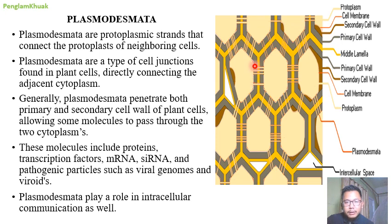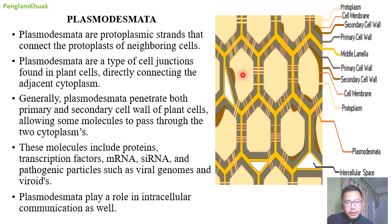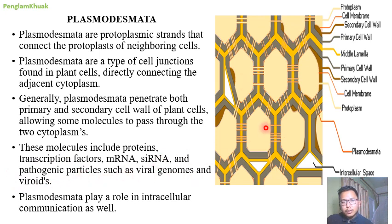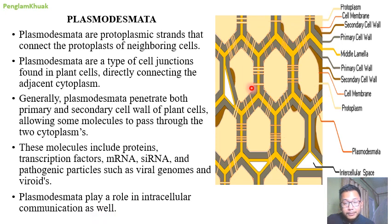Plasmodesmata allow some molecules to pass through the two cytoplasms. The molecules that are transported include proteins, transcriptional factors, mRNA, siRNA, and pathogenic particles such as virus genomes. Viruses are also transported via plasmodesmata. Plasmodesmata play an important role in intercellular communication, and inside the plasmodesmata, other tubules called desmotubules are also present.